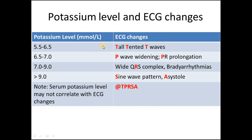This table shows the ECG changes according to the level of potassium. When potassium is between 5.5 to 6.5 mmol/L, there are tall tented T waves. At 6.5 to 7.5, there is P wave widening and PR prolongation. At 7 to 9, there is wide QRS complex and bradyarrhythmias. When potassium is greater than 9, there is a sine wave pattern and asystole. This sequence can again be remembered using the mnemonic TPRSA.